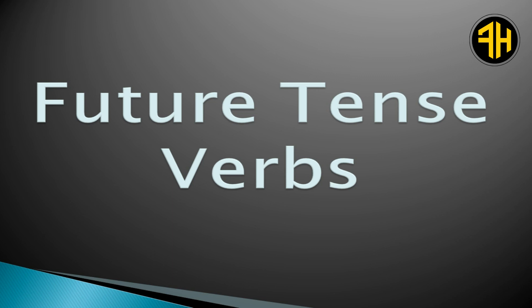Future tense verbs: Verbs which tell about actions which are going to happen are future tense verbs. For example, 'We will wake up at 6 am.' 'Will wake up' is a future tense verb because the action has not yet happened.